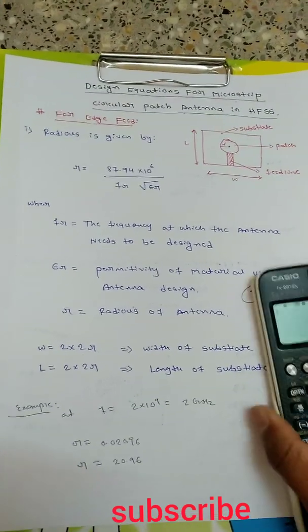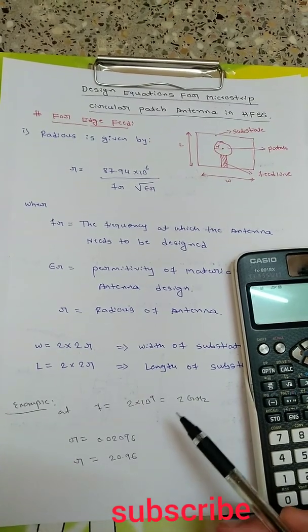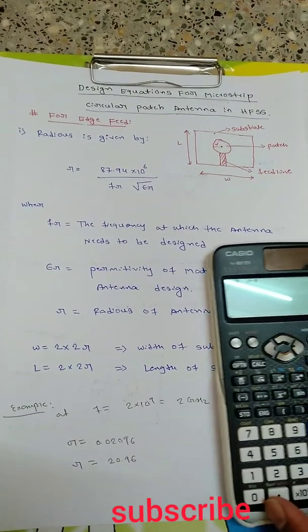Let us see an example. Design at a frequency of 2 x 10 to the power 9, that is 2 GHz. What radius will we be getting?